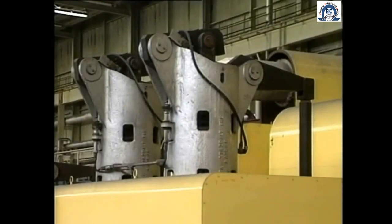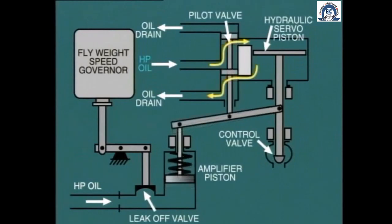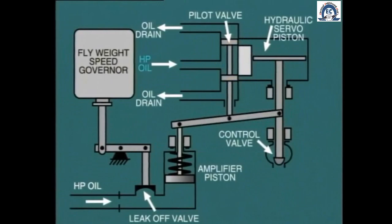On large turbines with multiple control valves, a considerable amount of power is required from the power cylinder. In this case, it's usual to employ a double-relay type of pilot valve. In this arrangement, we have high-pressure oil above and below the piston. When the position of the governor spindle changes — say for an increase in speed — the pilot valve lifts and allows high-pressure oil to flow into the space above the power piston. At the same time, the pilot valve exposes the space below the piston to the oil drain and returns the oil to the tank. The high-pressure oil above the piston pushes it downward and consequently moves the control valve in the closed direction. At the same time, it also moves the reset lever to bring the pilot valve back to neutral position, preventing further movement of the control valve.